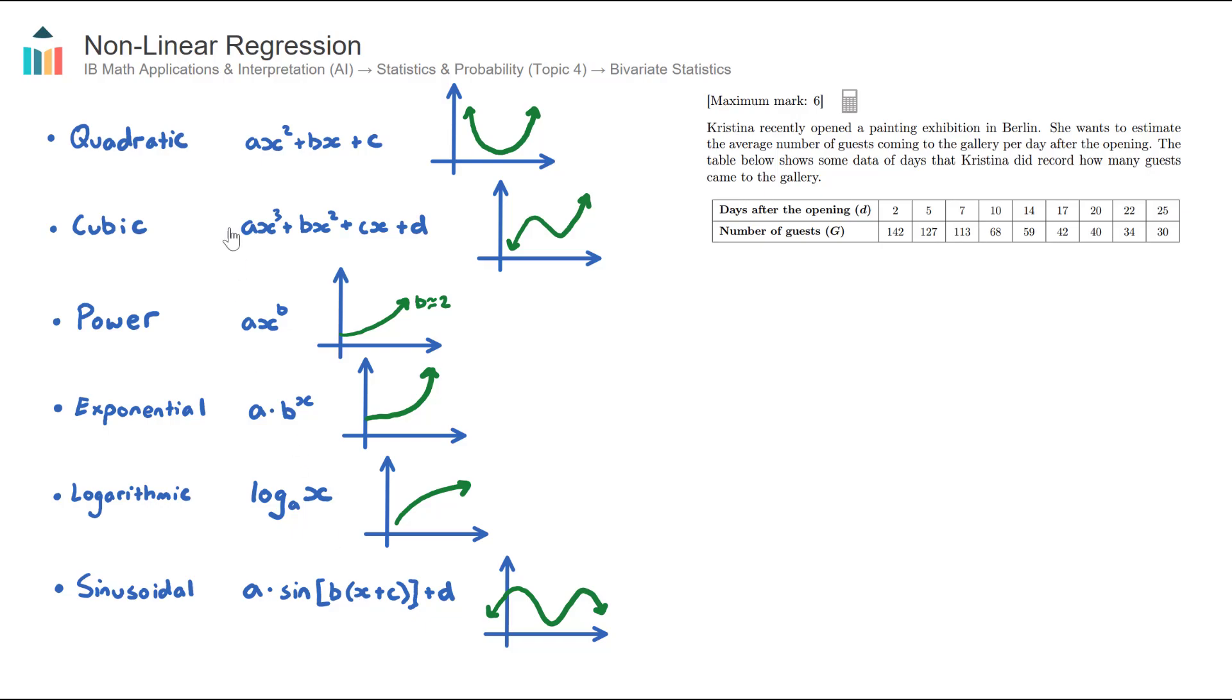And in the AI HL course for nonlinear regression, you'll encounter these six different types of models. And it's important to remember and definitely understand the standard form of these models. So I have them written here, and also the shape of the curves.